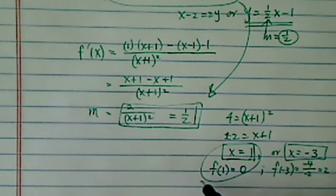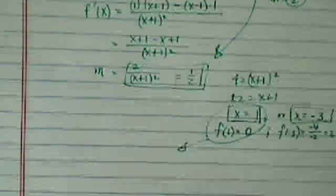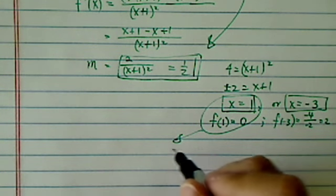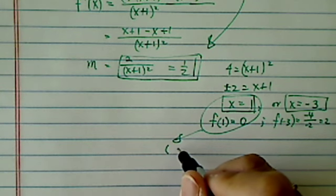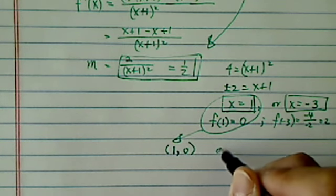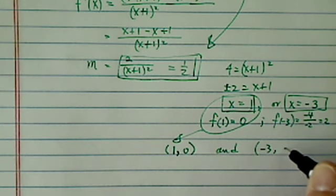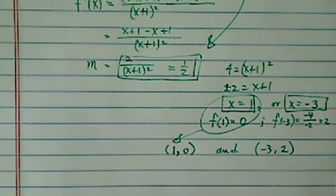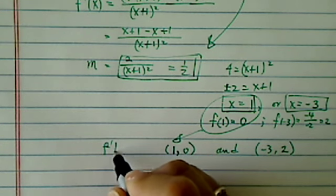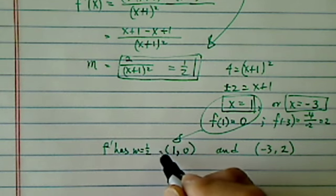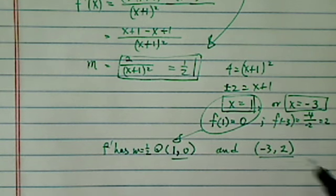So now we have two points. So they're giving you clues little by little, but it's kind of wrapped around, and you have to open up the wrappers to see what the clues are. So this point, 1 is when x equal to 1, y equal to 0, and there's another point, x equal to minus 3, y equal to 2. At those two points, the function f prime has m equal to half at those two points.